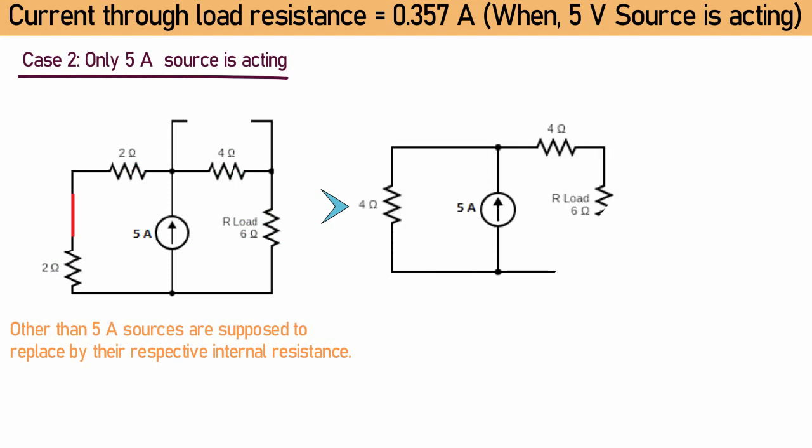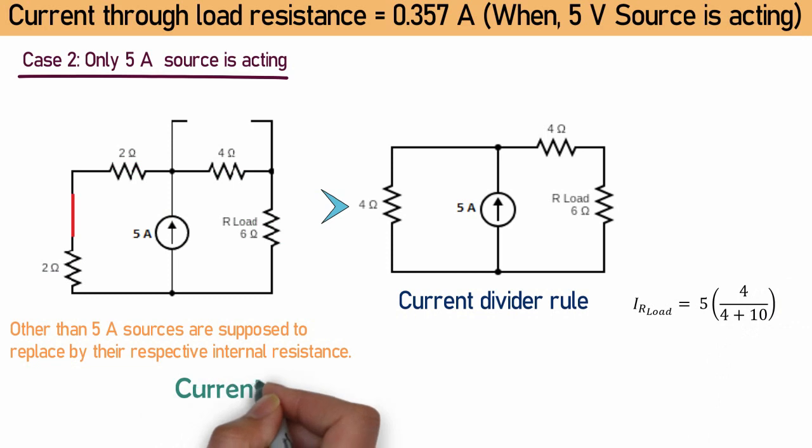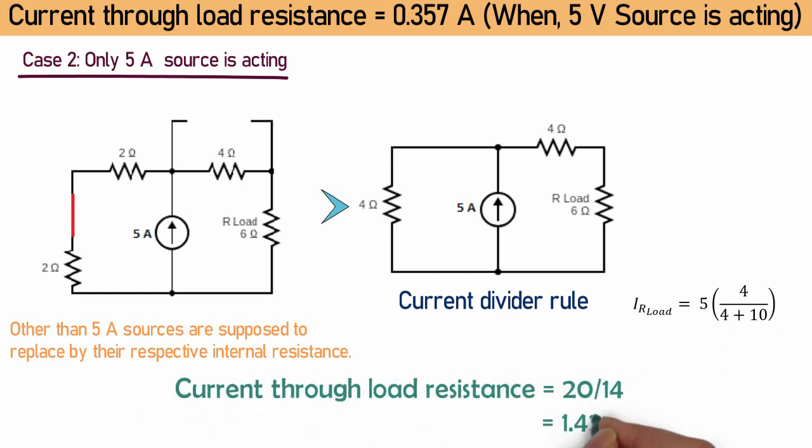So, here we can see two parallel combinations of resistance are connected with current source. By using current divider rule, current through load resistance could be found. And that is 1.42A.